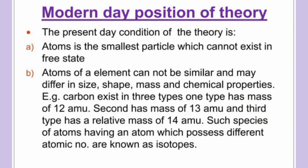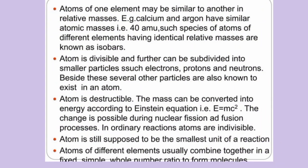The modern theory could not explain the concept of isotopes, so even within atoms of the same element there can be variation. Also, atoms of one element might have similar relative masses to another, such as chlorine and argon having similar atomic masses but different atomic numbers. Furthermore, atoms are divisible and can be subdivided into electrons, protons, and neutrons, and other particles. Finally, atoms are destructible — mass can be converted into energy according to Einstein's equation E = mc².